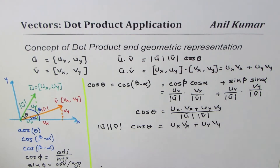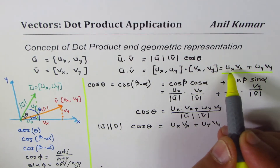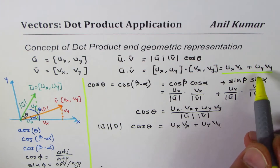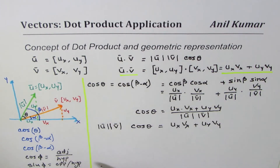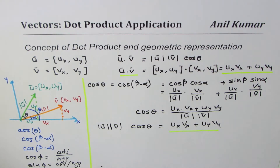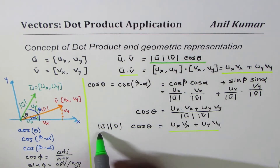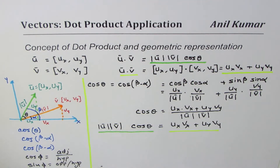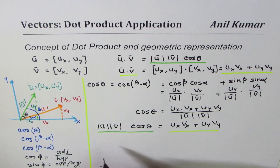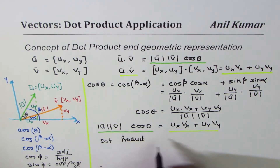You can clearly see that ux*vx plus uy*vy — the sum of products of x and y components — is u dot v. And the left side is the product of magnitudes times cos theta. Both are the same thing, and in vectors we call this the dot product.